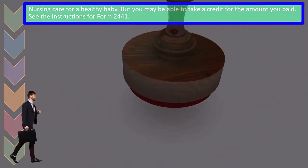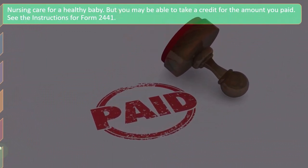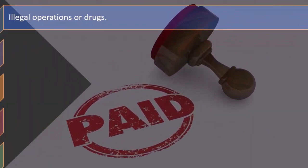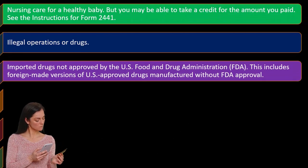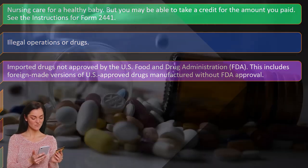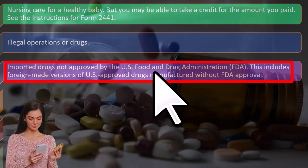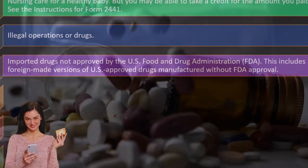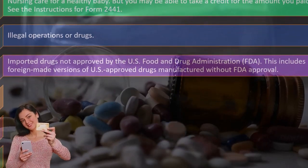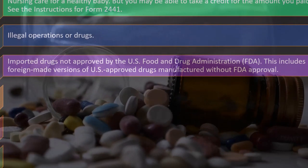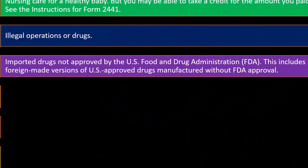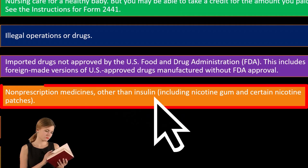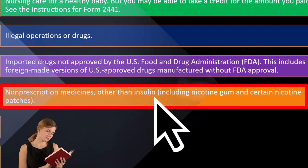Illegal operations or drugs cannot be deducted. So if you went out of the country, say to Mexico, to get a procedure or drugs, you can't deduct that. Imported drugs not approved by the U.S. Food and Drug Administration are also excluded. Foreign-made versions of U.S.-approved drugs manufactured without FDA approval are not deductible.